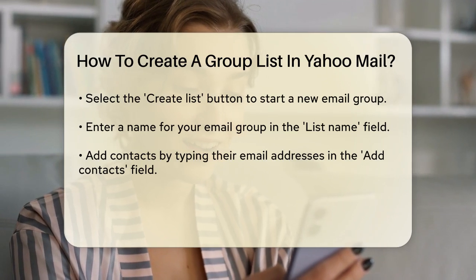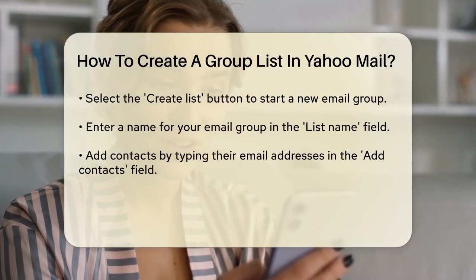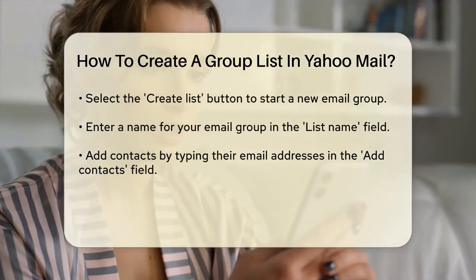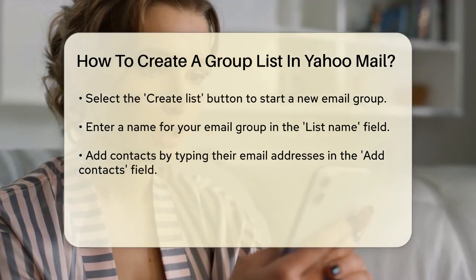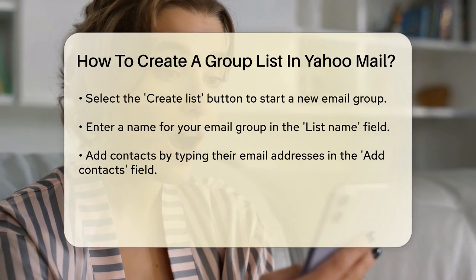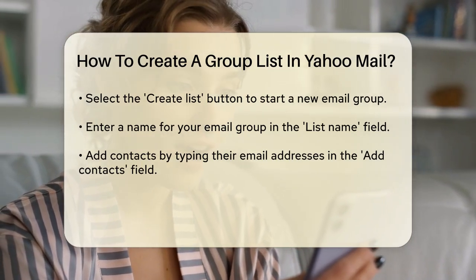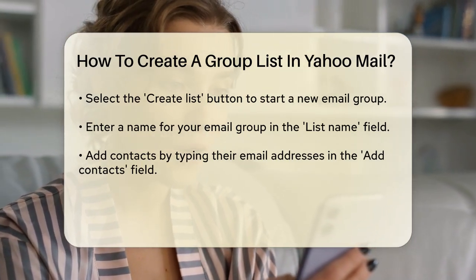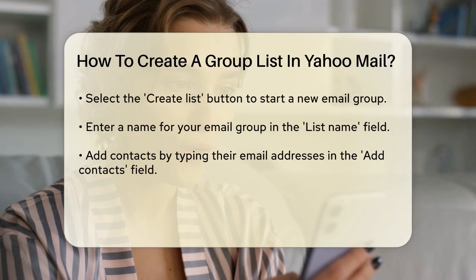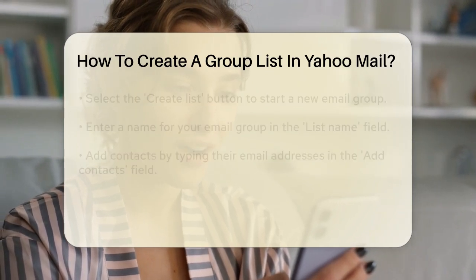Now it's time to add contacts to your group. You can type in the email addresses of the contacts you want to include in the Add Contacts field. Alternatively, you can select contacts from your existing Yahoo Contacts list — just start typing the name or email address of the contact and Yahoo will suggest matches from your contacts.